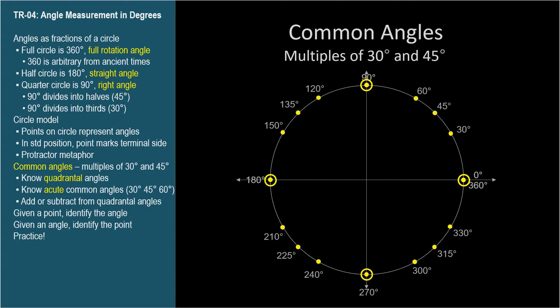We'll make learning these easier by using the quadrantal angles as little landmarks. So you need to know these five quadrantal angles. Remember, zero and 360 degrees are coterminal, so that's two angles with the same point. You also need to know the two acute common angles, 30 and 45 degrees. And you may as well memorize 60 degrees since it's right there in quadrant one.